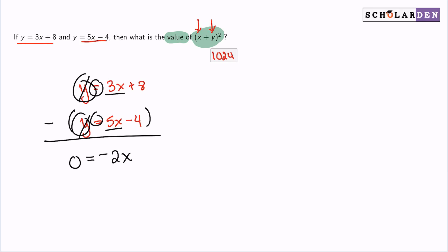And then lastly, 8 minus negative 4. Think about it. 8 minus negative 4, that is 8 plus 4, so that's 12. And so there we are. So now we can solve for x by moving the 2x over. So now we have 2x equals 12, x equals 6, after we divide by 2 on both sides.